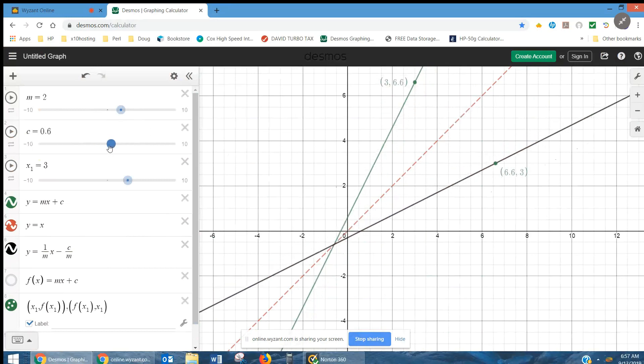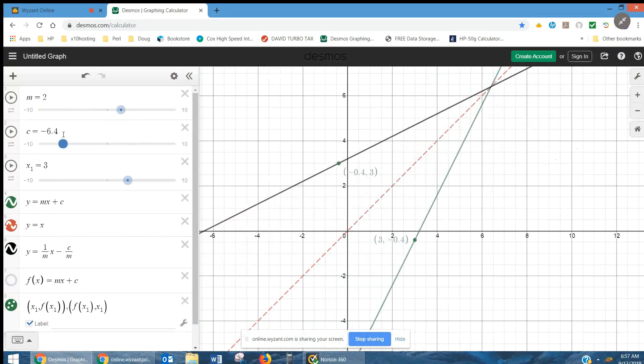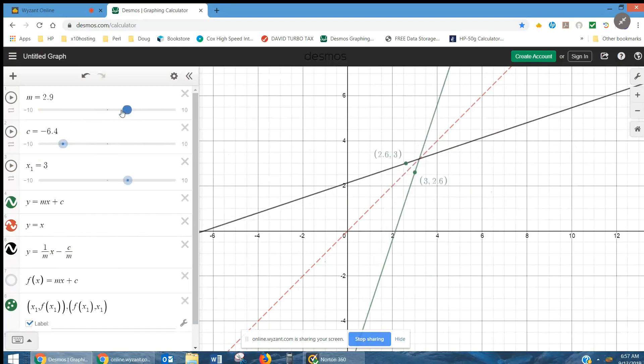And, as I change these, you'll see that the black line is a reflection of the green line. And, I've also put an ordered pair on each graph.